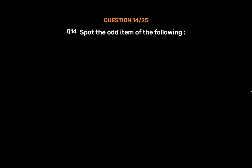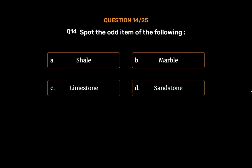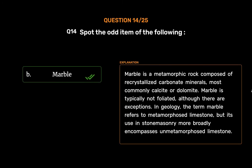Question No. 15 (Spot the odd item): Option A: Shale, Option B: Marble, Option C: Limestone, Option D: Sandstone. The correct answer is Option B, Marble. Marble is a metamorphic rock composed of recrystallized carbonate minerals, most commonly calcite or dolomite. Marble is typically not foliated. In geology, the term marble refers to metamorphosed limestone, but its use in stone masonry more broadly encompasses unmetamorphosed limestone.